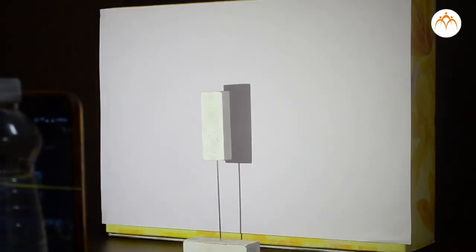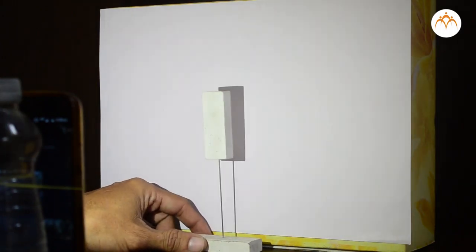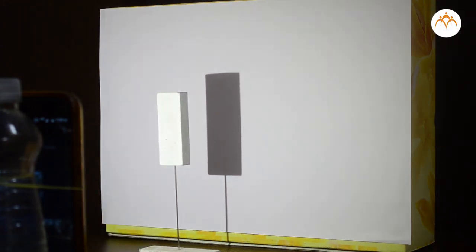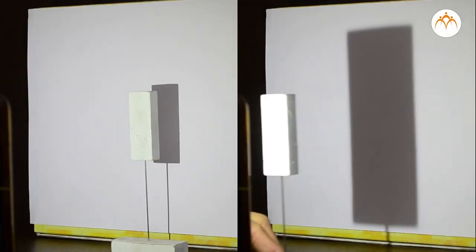Will I get the same result if I keep the torch steady and move the eraser instead? Let us try. When I move the eraser nearer the box, the size of the shadow gets closer to the actual size.